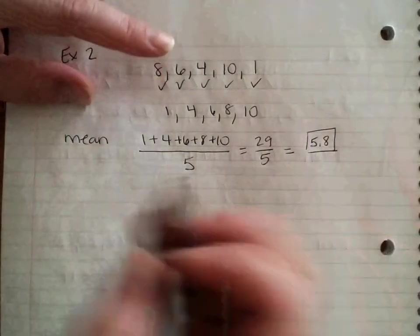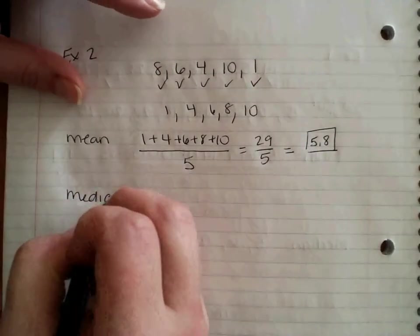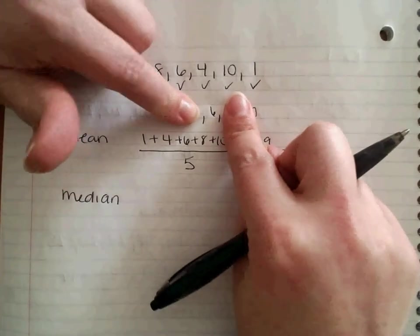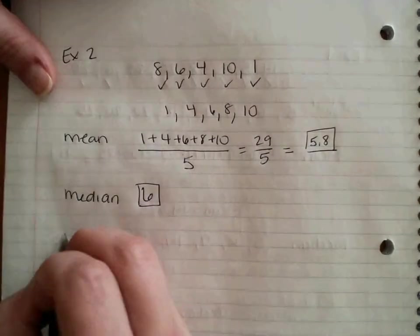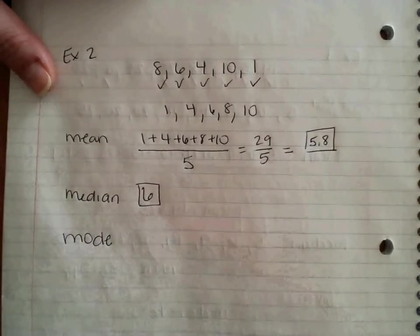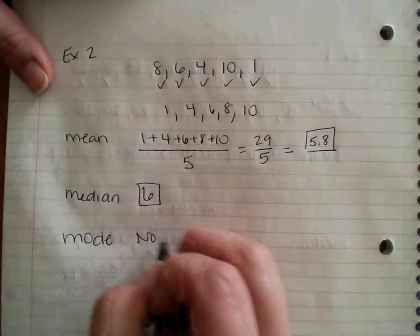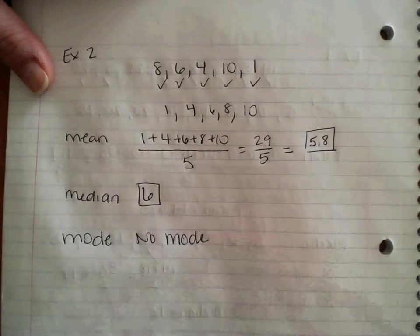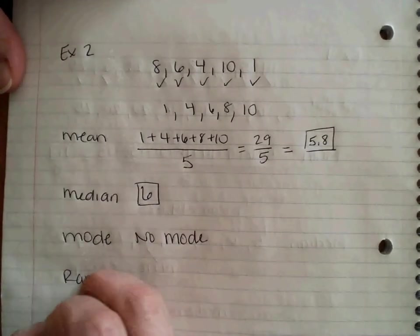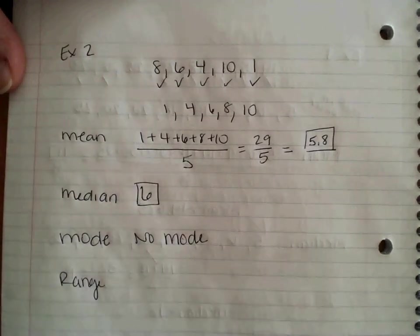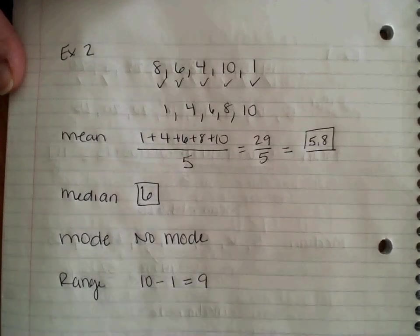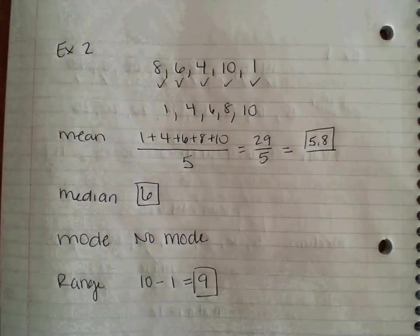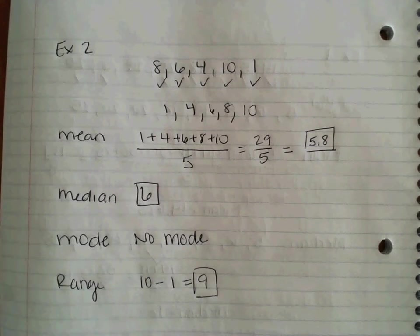My median. I'm going to cross them off until I get to the center. So cross, cross, the number in the middle. I only have 1 this time and it is 6. My mode. The number that pops up the most. They all only pop up once, so there is no mode. And the range. My distance from my largest to my smallest number. So my largest is 10. My smallest is 1. 10 minus 1 is 9. Hopefully you got them all correct. I will see you next time. Hopefully this helps.